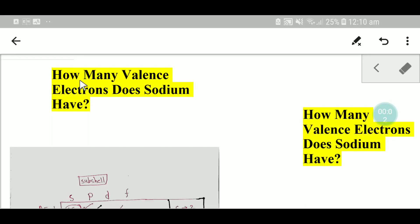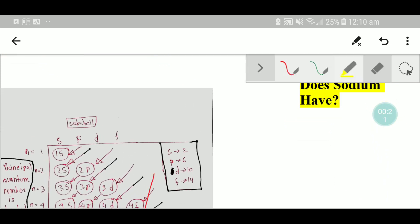Welcome to Chemistry Tutorial 360. Today we're going to find out the number of valence electrons in sodium. From the periodic table, we see that the symbol for sodium is Na and its atomic number is 11.